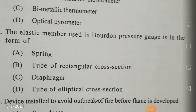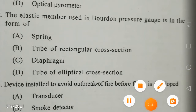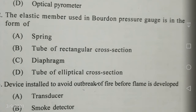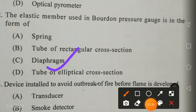The elastic member used in a Bourdon pressure gauge, which is normally used to measure pressure — is in the form of a tube of elliptical cross section. There is a chance we may choose the option diaphragm, but it is not the case. The correct answer is tube of elliptical cross section.